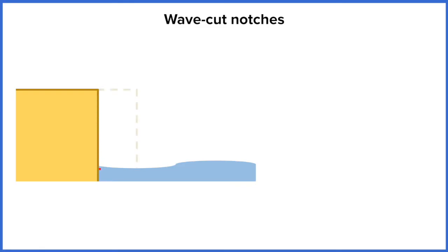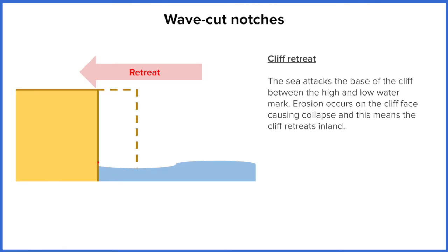This process is called retreat because the headland is moving back towards the coast as the water erodes away at the cliff. The way in which this actually occurs is where we get our wavecut notch, because the water can only really erode at the base of the cliff.